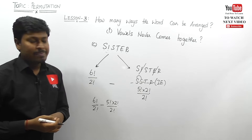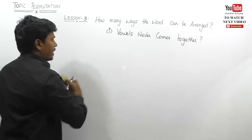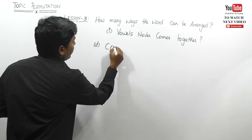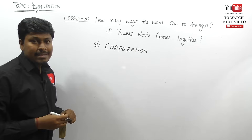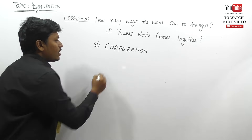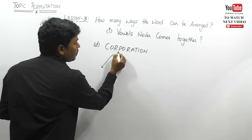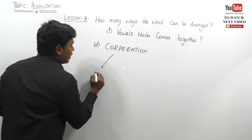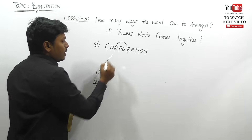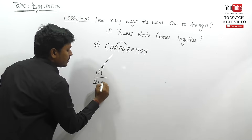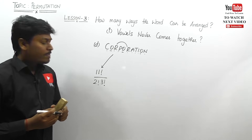Let me move on to another example — the word CORPORATION. The condition is vowels should never come together. According to lesson one, count how many letters there are: one through eleven — eleven factorial. R is repeated two times so divide by two factorial, and O is repeated three times so divide by three factorial. The total number of ways the word CORPORATION can be arranged is eleven factorial ÷ (two factorial × three factorial).